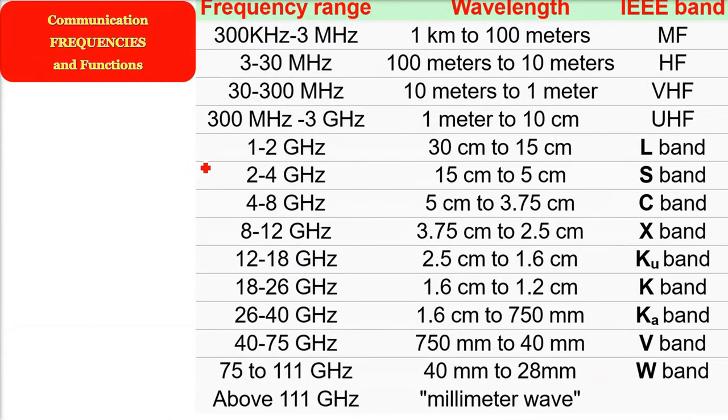This is just a revision of what we have just seen. I'm talking about IEEE. 1 to 2 is L band, 2 to 4 is S band. Then we have 4 to 8, that is C band. Then 8 to 12 is X band.